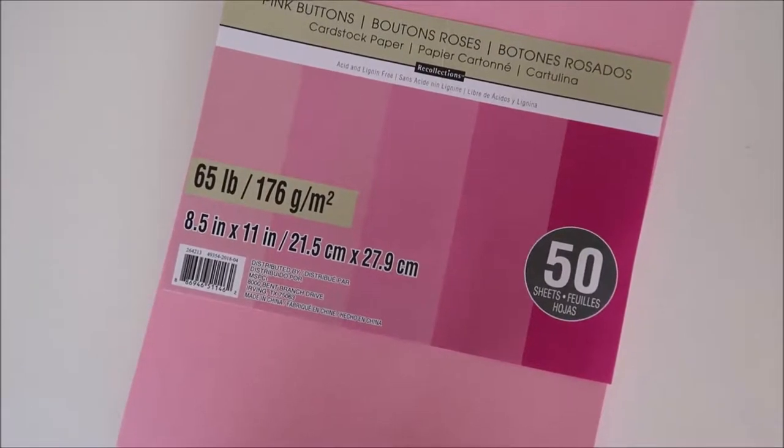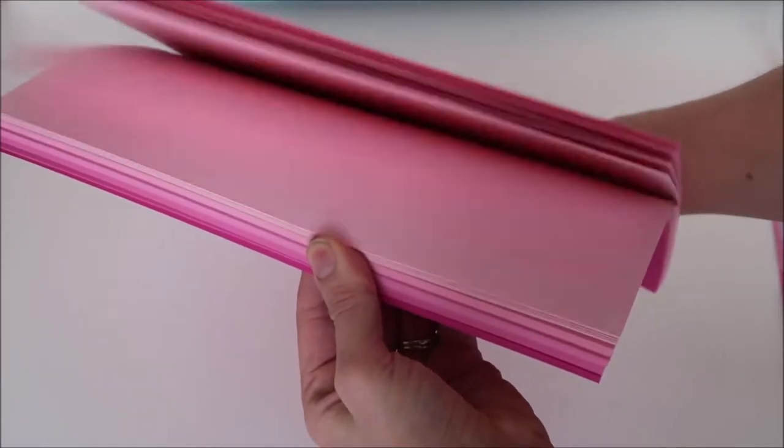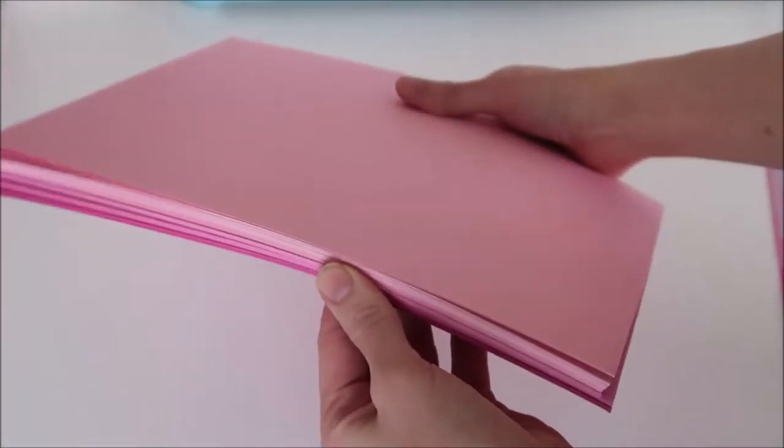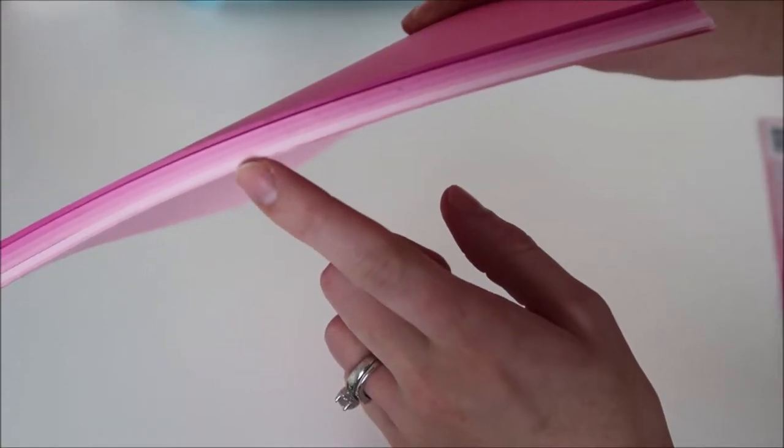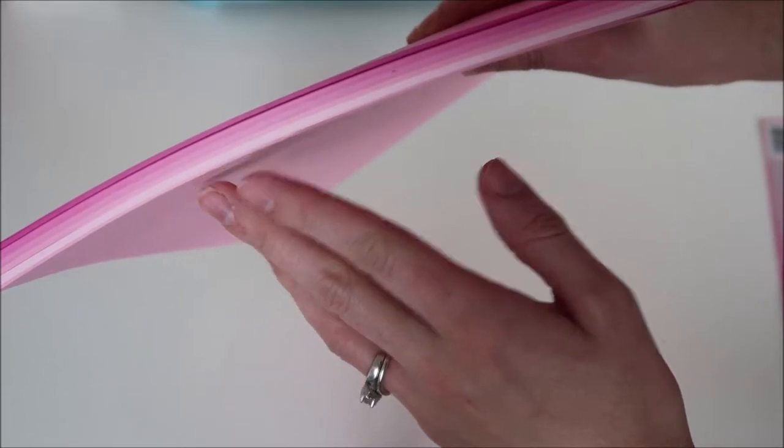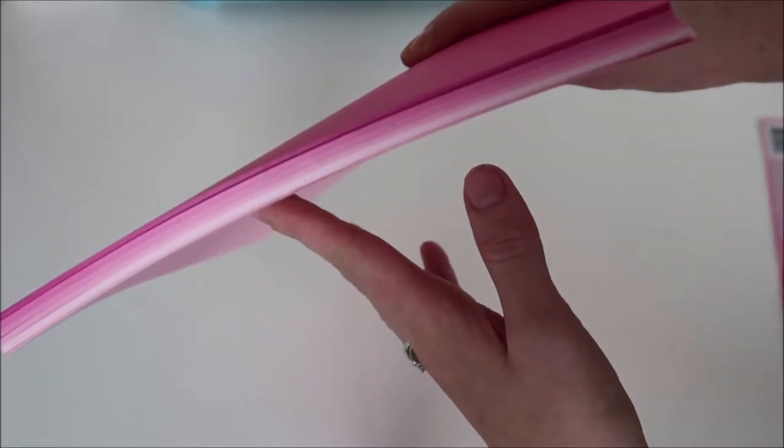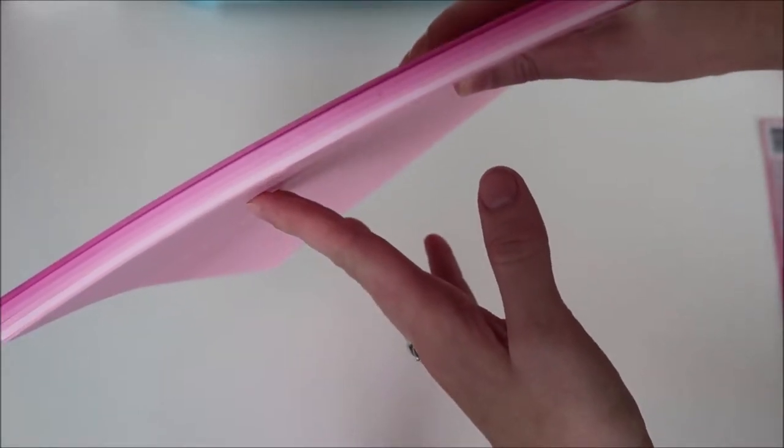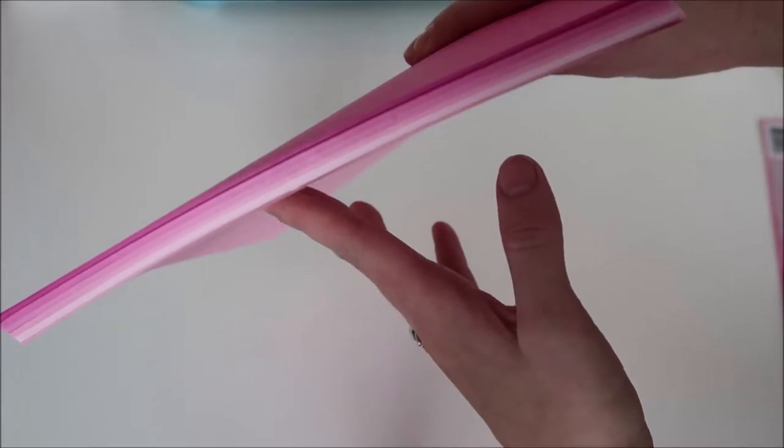I would recommend checking the edges of the cardstock just to make sure that's not white. If it is white then when you make your flowers you'll be able to see that. You can see here that the color is on the edges of the cardstock.